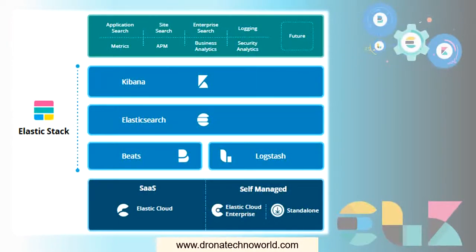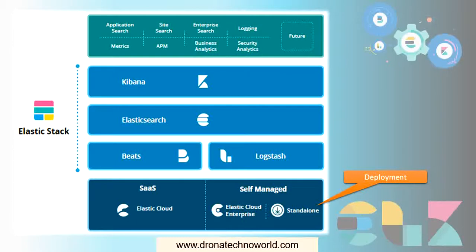If you remember, there are several components that come with the Elastic Stack — for example, Beats, Logstash, Elasticsearch, and Kibana. Apart from this, there are several deployment components of two types: one is the SaaS component, which is Elastic Cloud, and the next is self-managed, where we have to manually deploy the Elasticsearch components.